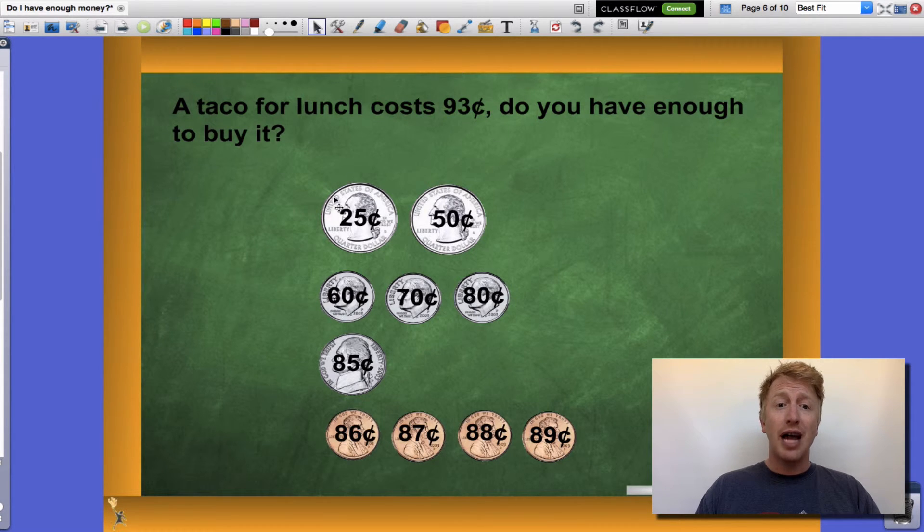When I group this together, I notice that I have quarters, dimes, nickels, and pennies. Now, each quarter is worth 25 cents, so I have 25, 50 cents.